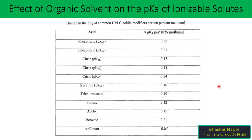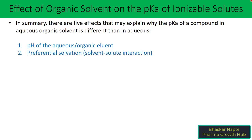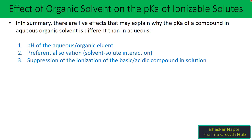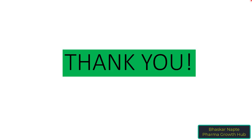You may have to add more buffer to achieve a similar kind of ionization for the salt. In summary, there are five effects that may explain why the pKa of a compound in an aqueous-organic solvent is different than in a purely aqueous system: (1) the pH of the aqueous-organic solvent system, (2) preferential solvation or solvent-solute interaction, (3) suppression of ionization of the basic or acidic compound in solution, (4) change in the dielectric constant, and (5) specific ion-solvent effect. Because of these, you may see a change in the pKa value of a compound in the presence of an aqueous-organic solvent system.